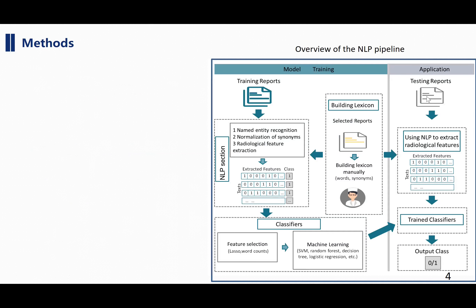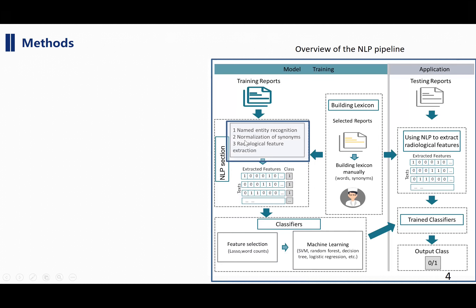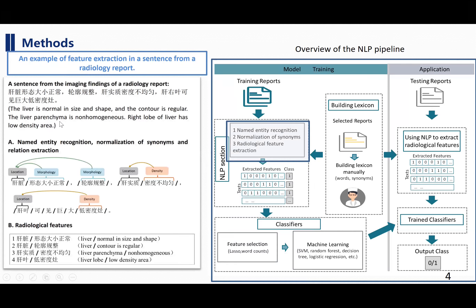Here is the overview of our NLP pipeline. There are mainly three sections: the first is NER, then normalization of synonyms, and then with some rules we could get the radiological features. For example, for the sentence 'the liver is normal in size and shape,' after the three NLP steps, we could get the radiological feature: liver — normal in size and shape. With all these features, we could get the feature matrix.